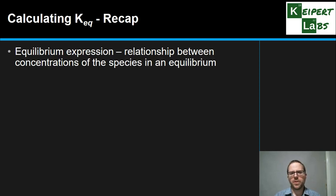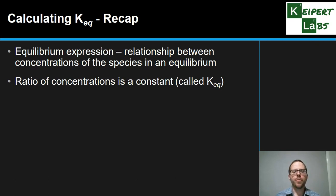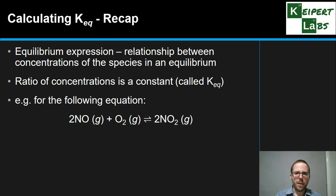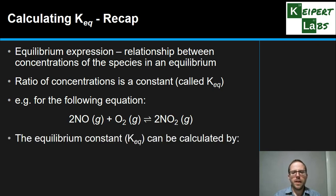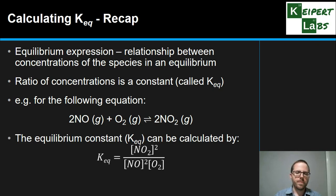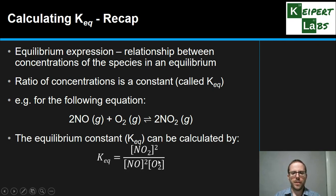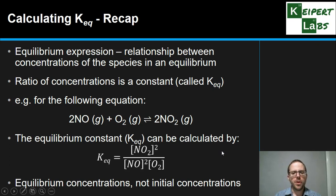To calculate the equilibrium constant, we use the equilibrium expression — the mathematical formula that relates the concentrations of all species in an equilibrium, both reactants and products. The ratio of concentrations at equilibrium is a constant we call KEQ, which comes in different types depending on the equilibrium. For example, for nitric oxide and oxygen reacting to form nitrogen dioxide, we calculate KEQ using NO2 squared over NO2 times O2 — products over reactants, where stoichiometry matters. Remember, we're talking about equilibrium concentrations, not initial concentrations.